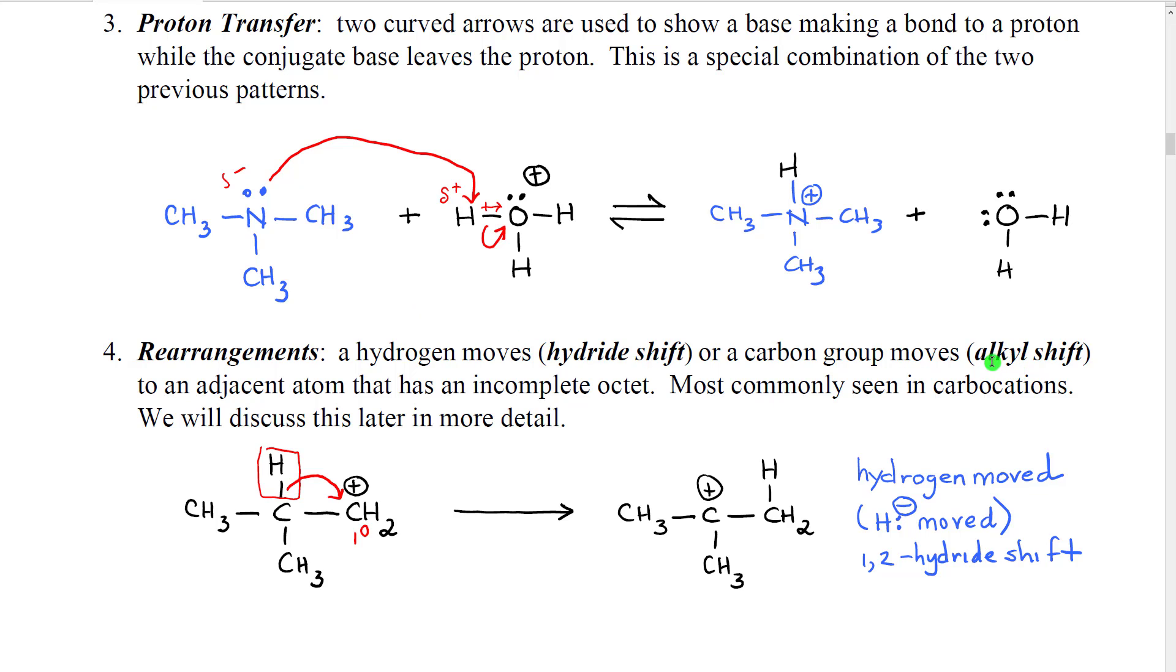We also have 1-2 alkyl shifts. Where instead of having a hydrogen, we might have a methyl move. Or even a larger alkyl group. Although, typically as we're going to see later, usually the smallest group prefers to move.